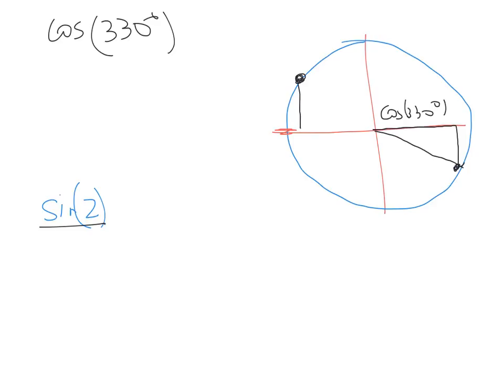And then we're going to put in our triangle, and we're going to say this part, the vertical part, is sine of 2. So that's how we go about illustrating that on a Cartesian plane.